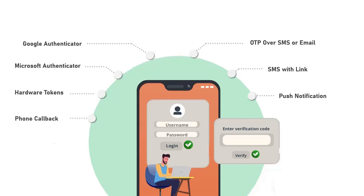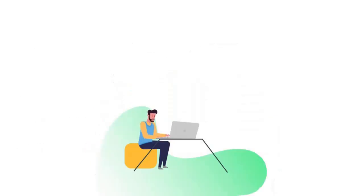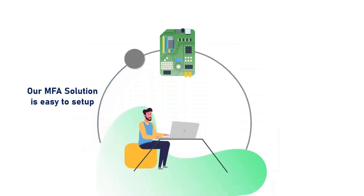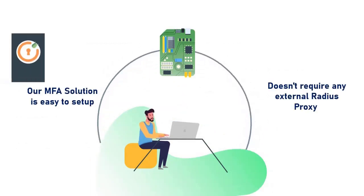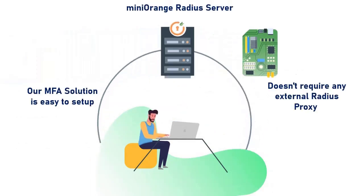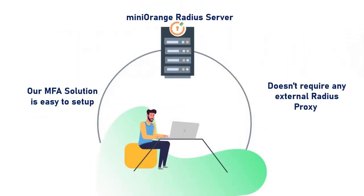Phone callback, Mini Orange soft token, and many more. Unlike other MFA solutions, our solution is easy to set up and does not require any external Radius proxy module to be installed on top of your Juniper servers.